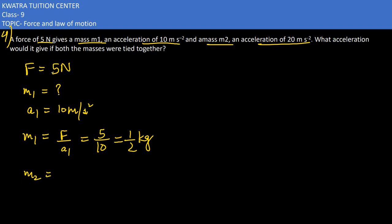Now M2 would be F over A2. F in this case is 5, A2 is 20. So you would get 1 by 4 kg.